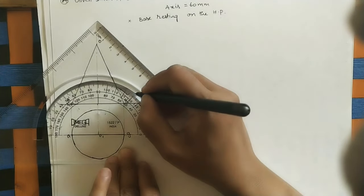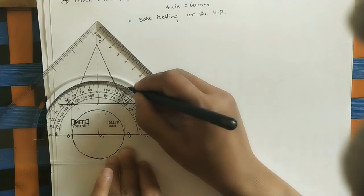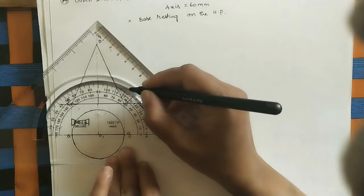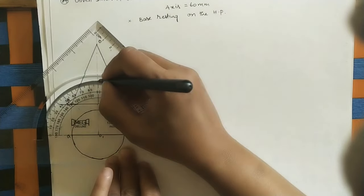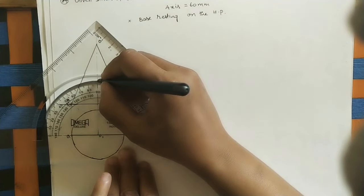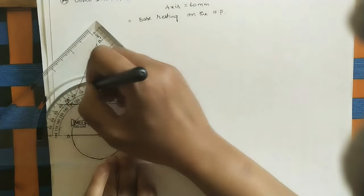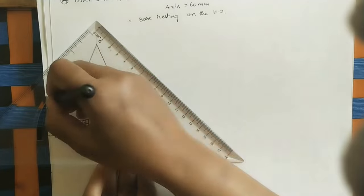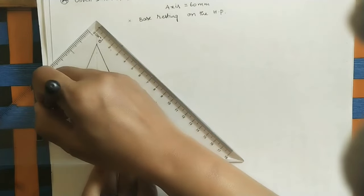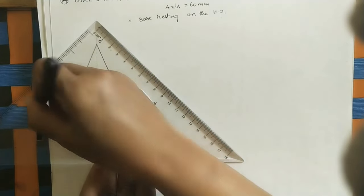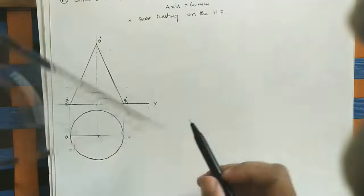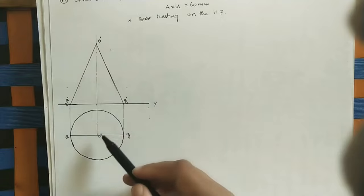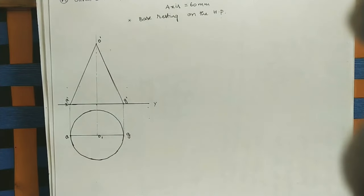Continue marking the divisions: 30, 60, 90 — which already appears at the diameter — 90 plus 30 is 120, 120 plus 30 is 150, and so on. Join all these division points to the center to create the generator lines.